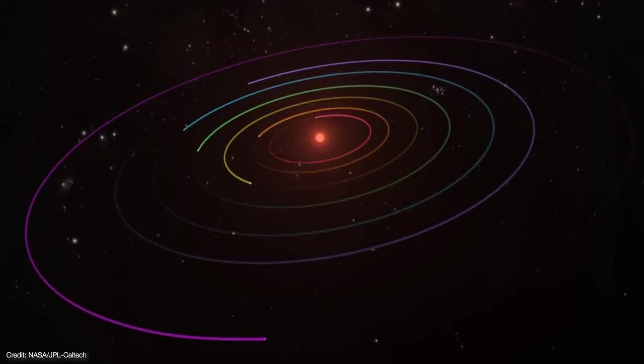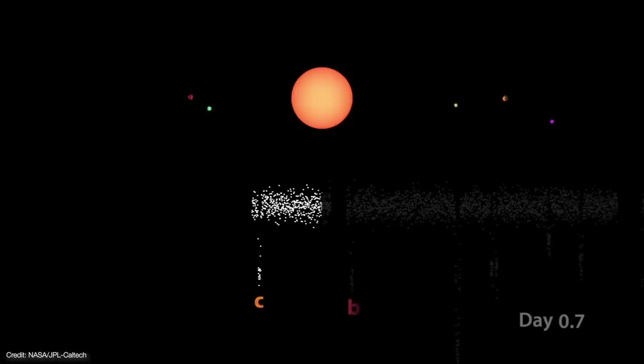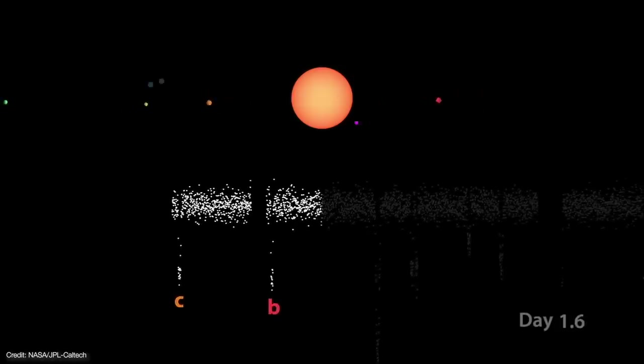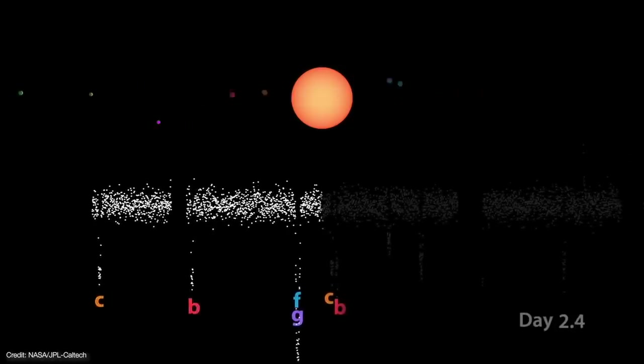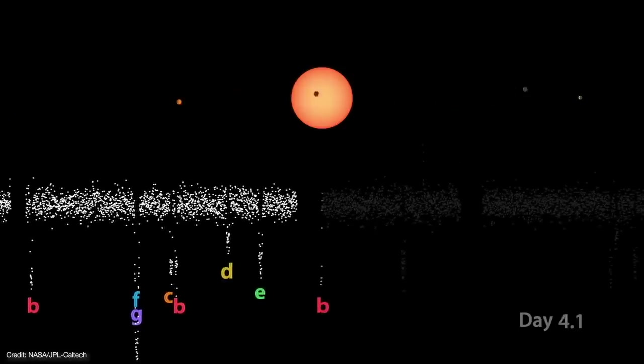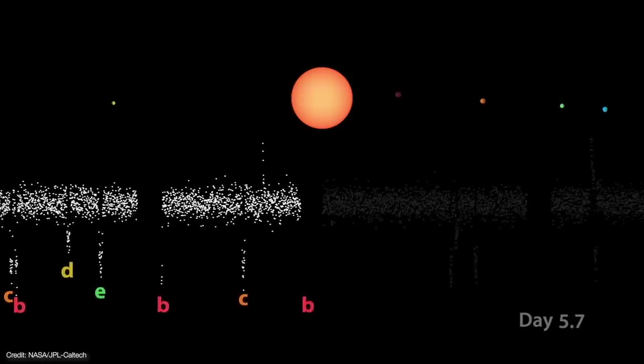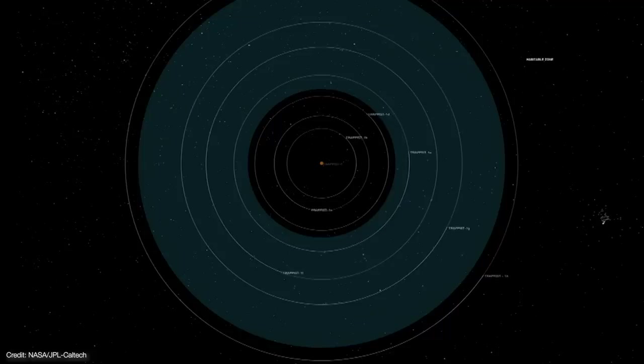But Spitzer's most dramatic exoplanet result was its look at the TRAPPIST-1 system. After monitoring the system for 500 hours, Spitzer revealed that TRAPPIST-1 is home to seven, count them, seven Earth-sized planets surrounding its red dwarf host star. And if that weren't amazing enough, at least three of those planets orbit in the star's so-called habitable zone.